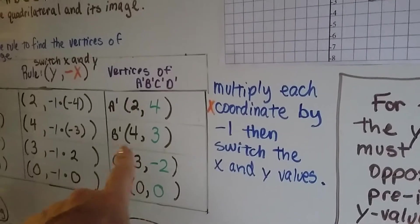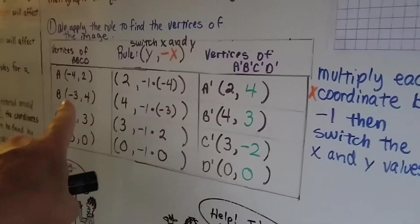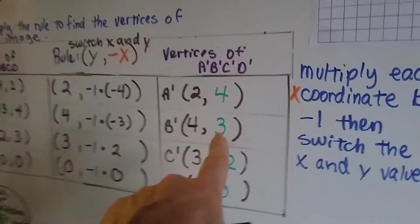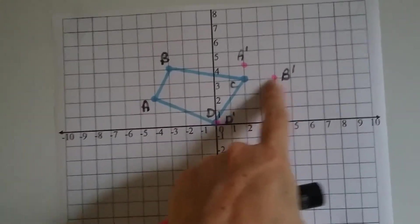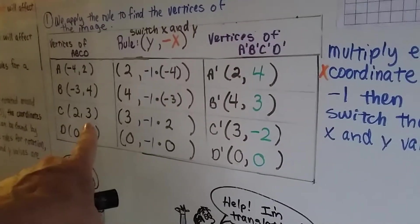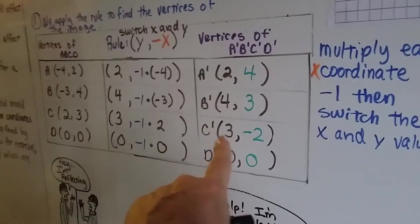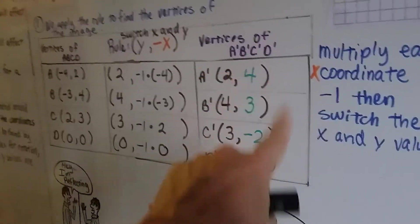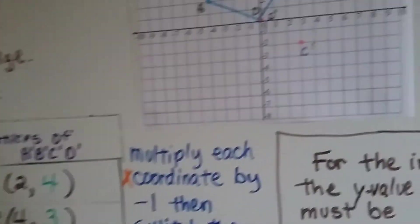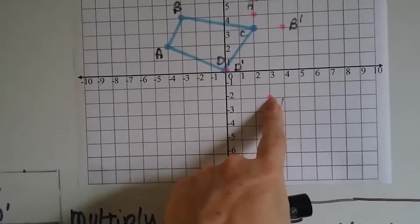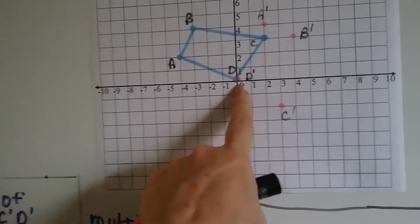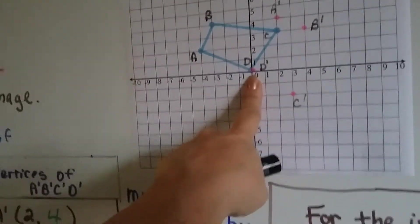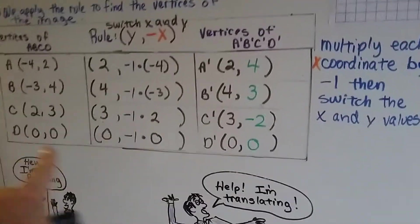B prime is now 4, 3. It used to be negative 3, 4. Now it's positive 4, positive 3. And C is now 3, negative 2. It was 2, positive 3. Now it's 3, negative 2. See how they swapped places? And the signs are opposite. So now it's 3, negative 2. And then D prime is going to be at 0, 0, the origin, because that's where it was before.